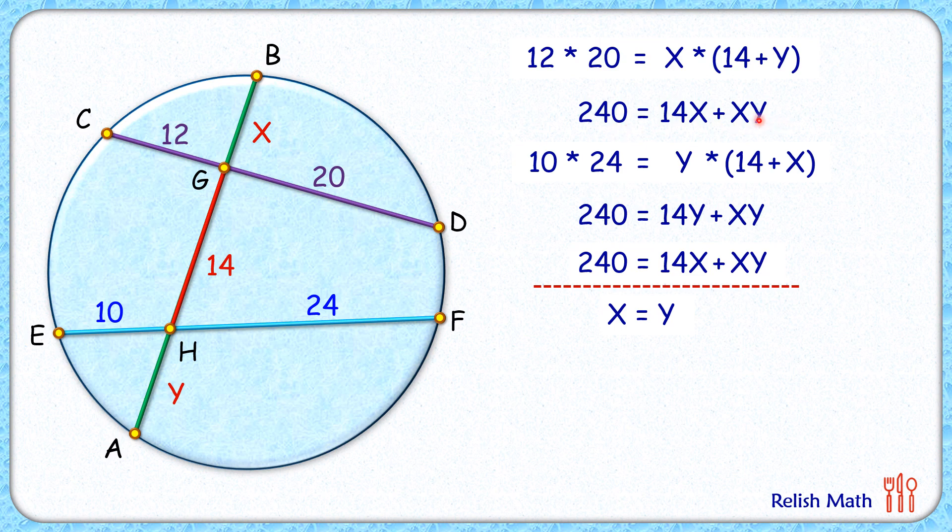Putting this here now in the first equation, it will replace y with x, so basically this term will become x squared. So the first equation, writing it again by replacing y with x, we'll get this equation. Let's take everything on one side, so we'll get a quadratic in terms of x.